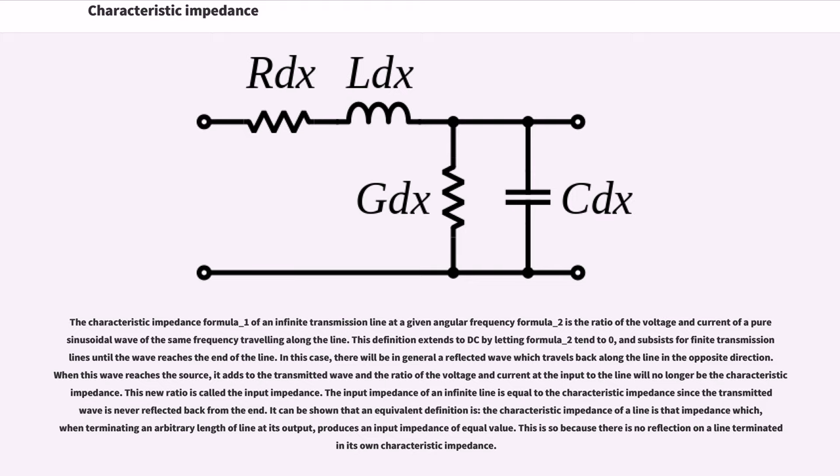The characteristic impedance formula of an infinite transmission line at a given angular frequency is the ratio of the voltage and current of a pure sinusoidal wave of the same frequency traveling along the line. This definition extends to DC by letting the frequency tend to zero, and subsists for finite transmission lines until the wave reaches the end of the line.